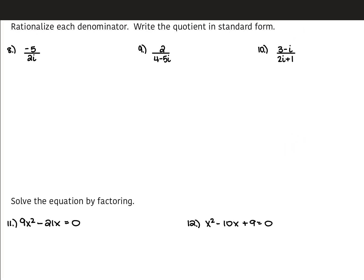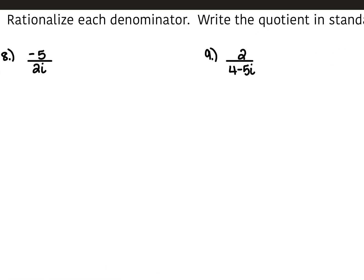For our next part, we are rationalizing the denominator and writing the quotient in standard form. For number 8, we're given negative 5 over 2i. The complex conjugate of 2i is negative 2i, so we're going to multiply the top and the bottom by negative 2i. Negative 5 times negative 2 is positive 10 — keep the i attached. 2 times negative 2 is negative 4, and i times i is i squared, which is negative 1, so that changes the sign on the 4 to positive. You have 10i over 4. Since 10 and 4 are both divisible by 2: 10 divided by 2 is 5, 4 divided by 2 is 2. So that's 5i over 2.